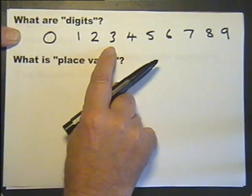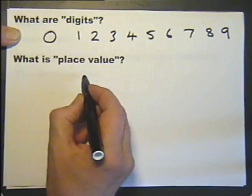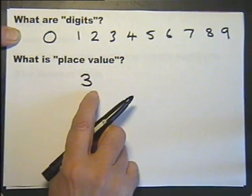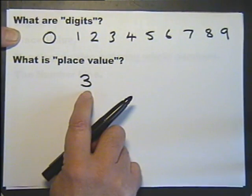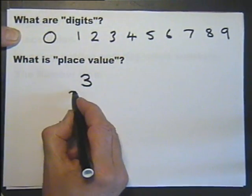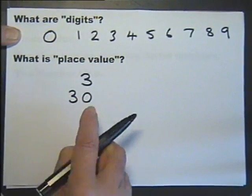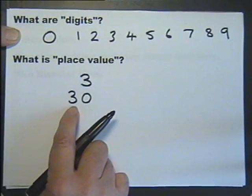So let's consider the digit 3. As it stands, it is not only the digit 3, but the number 3. However, if we write it like this, we get the number 30.